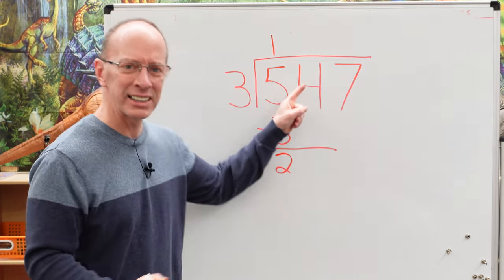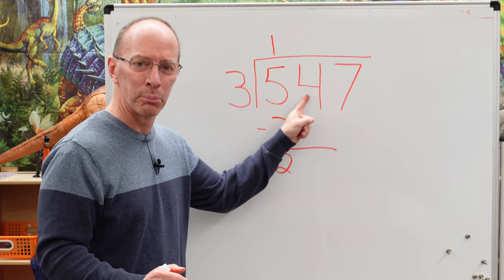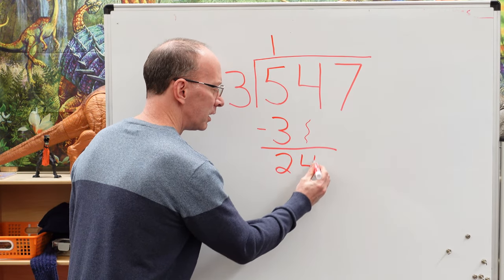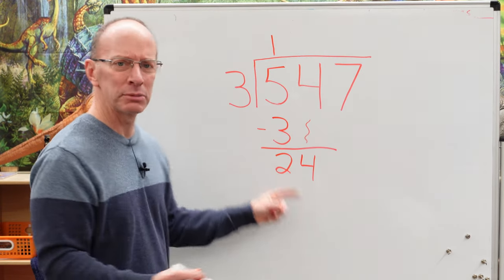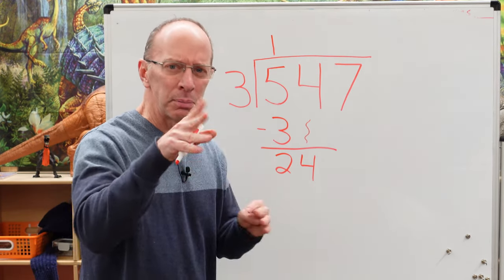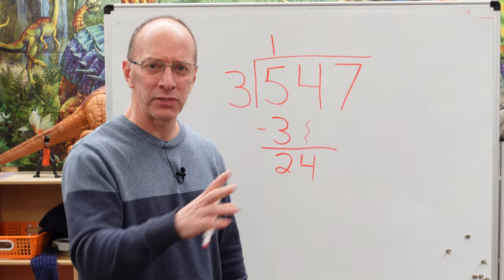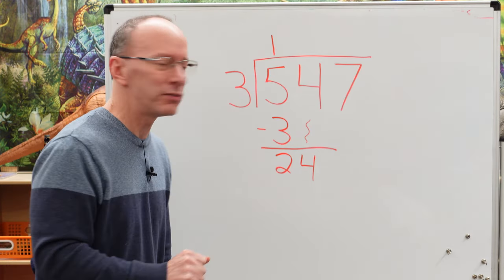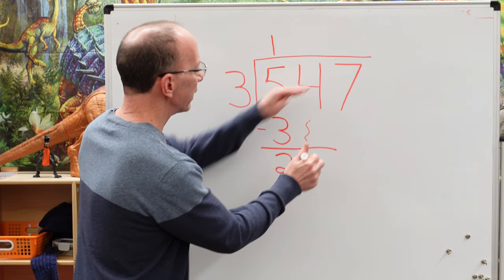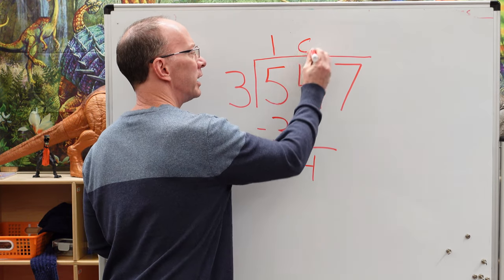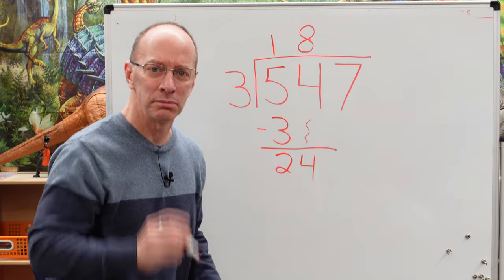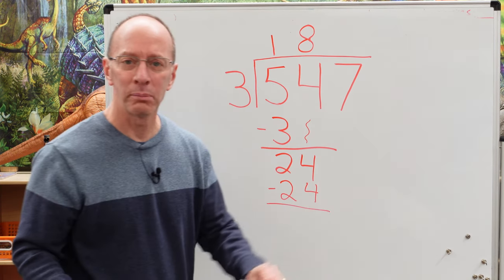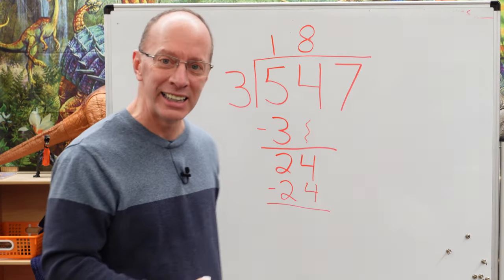Now we start to work with the next number here. We've got to bring this 4 down. Drop it down. Now we have 24. How many times can I put 3 into 24? 3 times 3 is 9. 3 times 5 is 15. 3 times 8, that's it. 24. So I'm dealing with this number here, and I put the 8 right here. 8 times 3 equals 24. Subtract it. 24 minus 24 is 0.